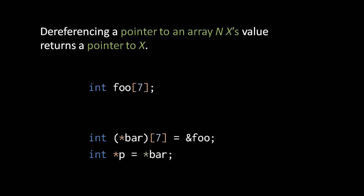Here's the rule that's most surprising. Normally, when we dereference a pointer to x, we get back the x value to which the pointer pointed. The exception is with pointers to arrays. An array is not an actual kind of value, so dereferencing a pointer to an array can't possibly return an array value — there's just no such thing. Instead, dereferencing a pointer to an array of N x's will return a pointer to x. So here, dereferencing this pointer to arrays of seven ints variable bar returns a pointer to int, which we can assign to the pointer to int variable p.